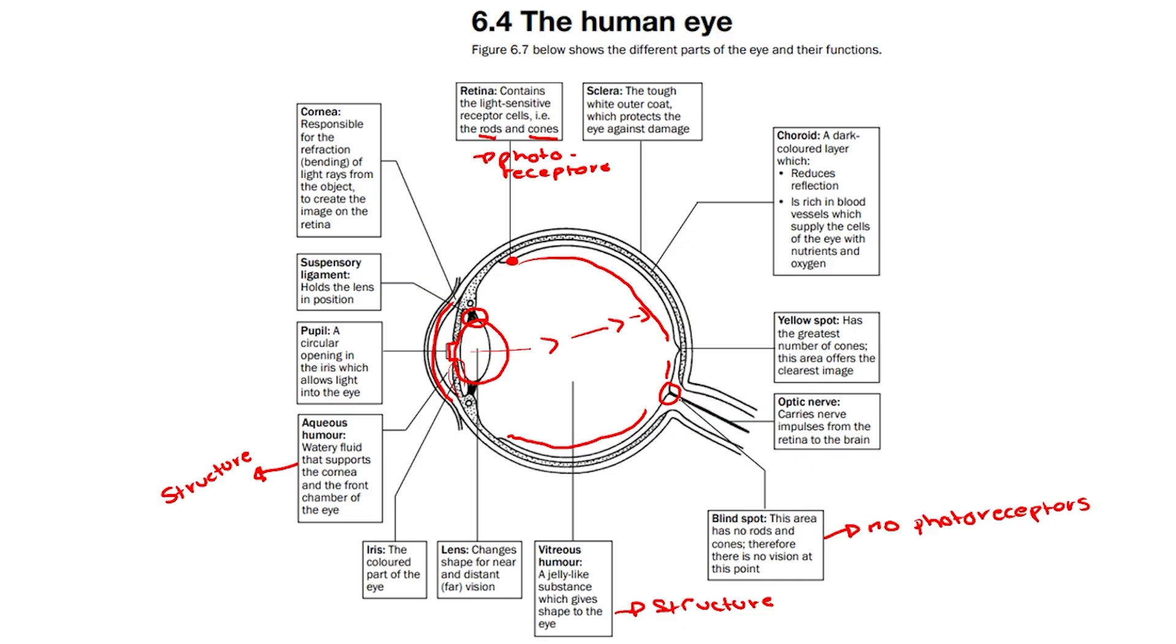We then have the optic nerve, which is this nerve over here. The optic nerve carries nerve impulses from the retina to the brain, allowing for an image to be produced.